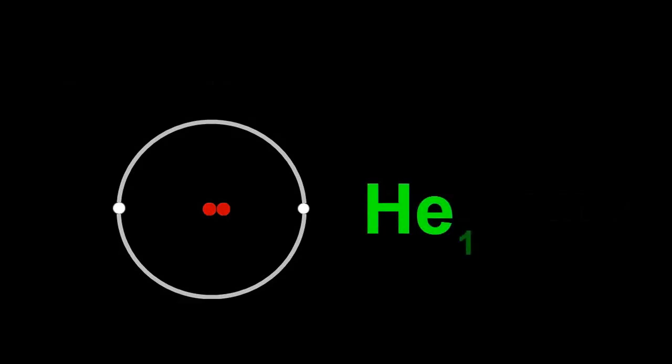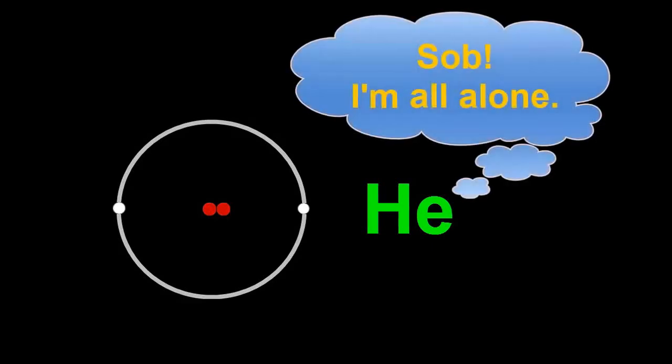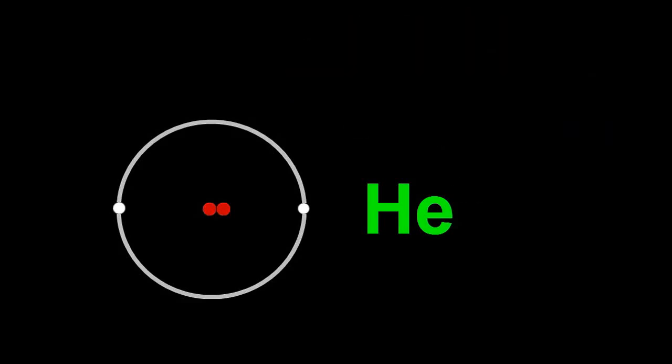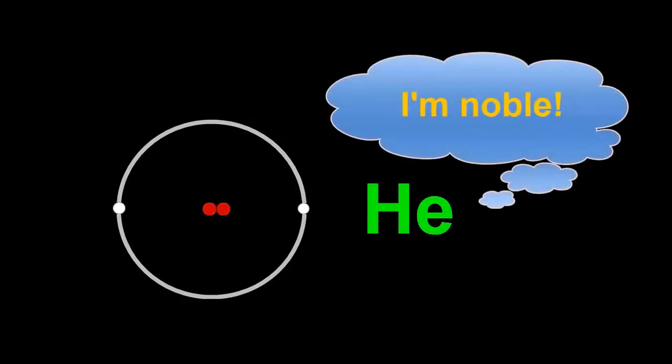We could put a 1 in the formula, but scientists agree that we can leave the number out when there is just one atom, and it's not needed. Maybe we should feel sorry for helium, or maybe we should admire it, because it doesn't need any other atoms. That's why it's called a noble gas.